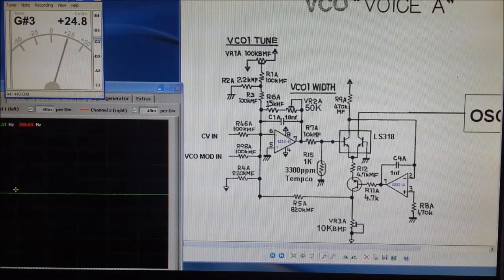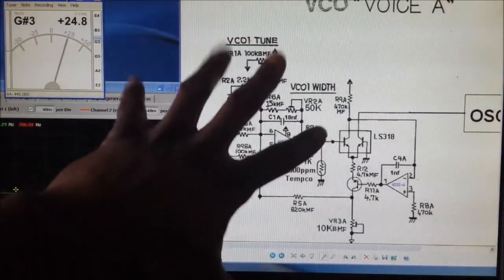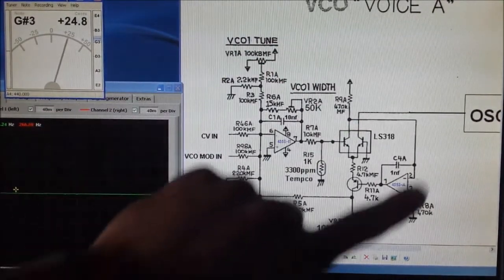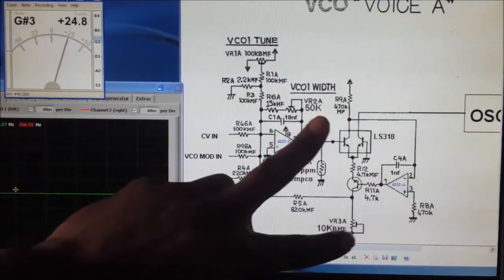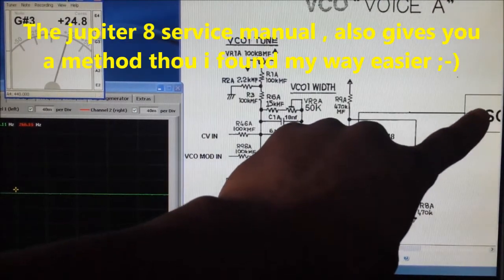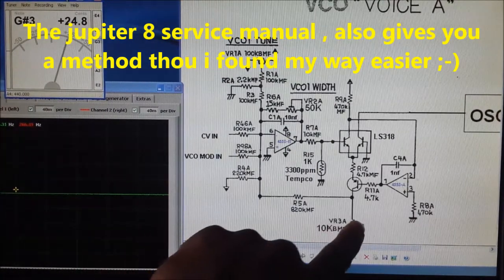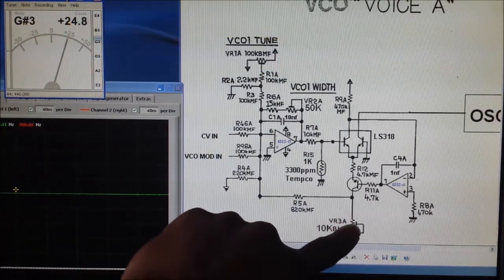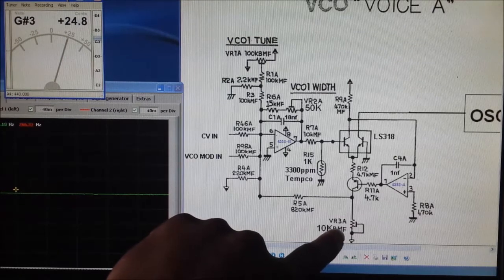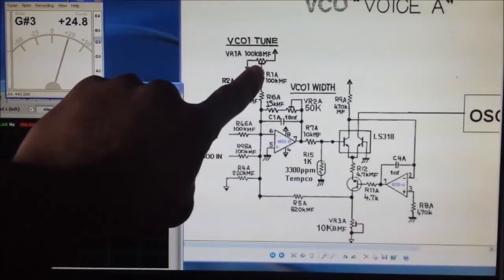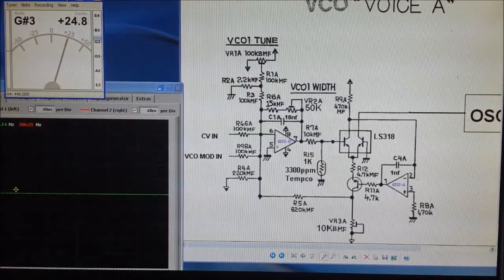Here we have the Jupiter 8 exponential converter schematic. I've just put this block on to show this is going to the VCO. We can see I've done a few modifications where we've got a 10k trimmer here which is VR3, VR2 50k, and VR1 stays exactly the same.